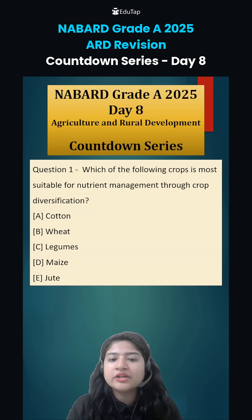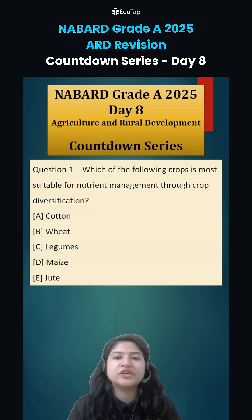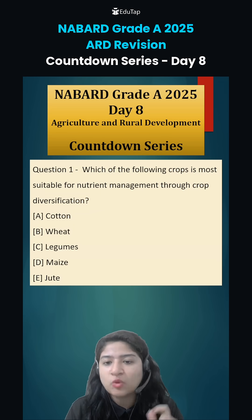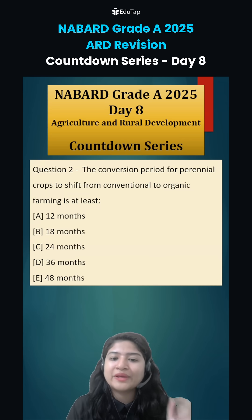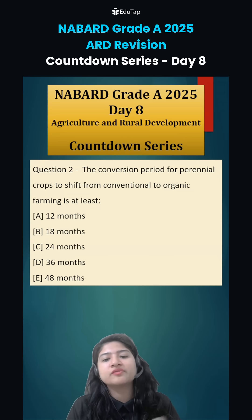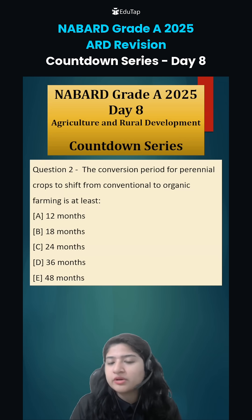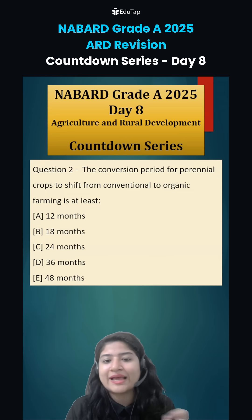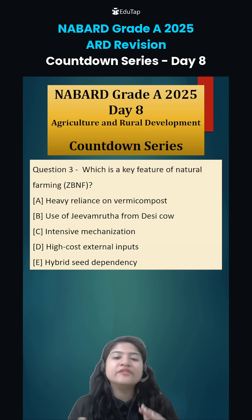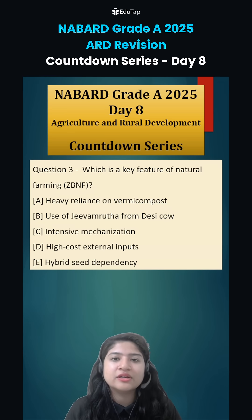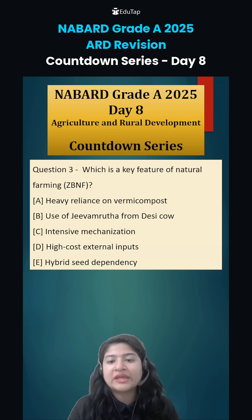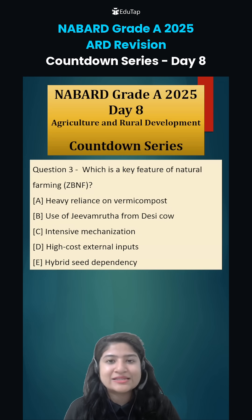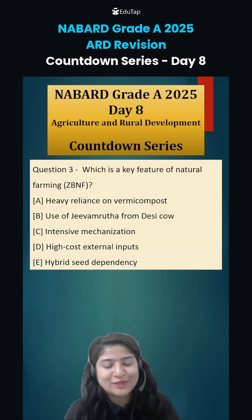Now, here are today's questions. Question 1: which crop is most suitable for nutrient management for crop diversification? Question 2: the conversion period for perennial crops to shift from conventional to organic farming is at least — what? And what is the key feature of Zero Budget Natural Farming? Comment down your answers and we will discuss them in the next class. Thank you.